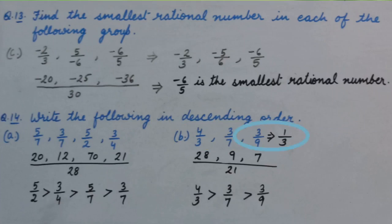My dear students, if any rational number is reducible, we can reduce it. So we will reduce 3 upon 9 by 3, and we get 1 upon 3. After that you know how to solve it. LCM of 3 and 7 is 21. And numerator for equivalent rational numbers will be 28, 9, and 7.